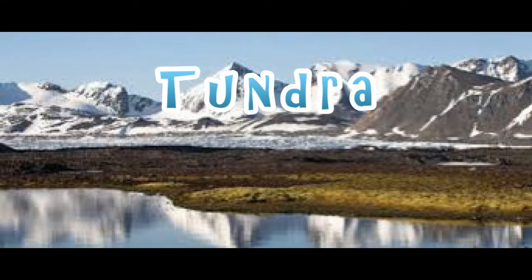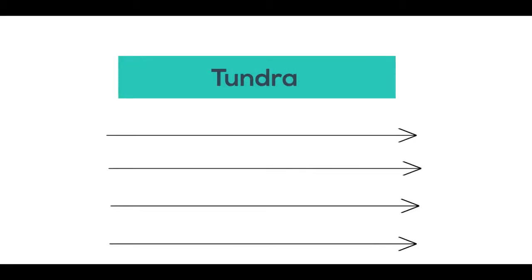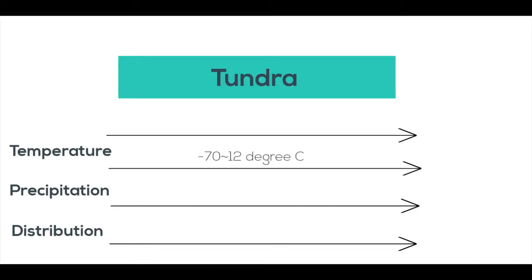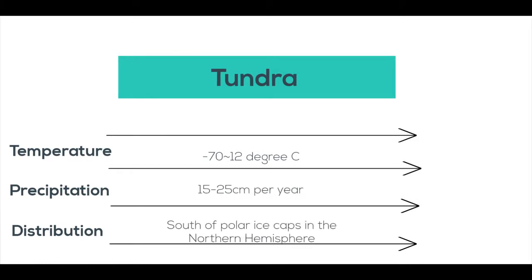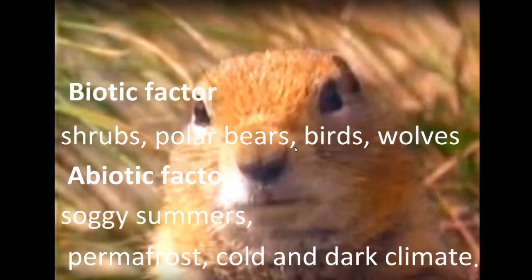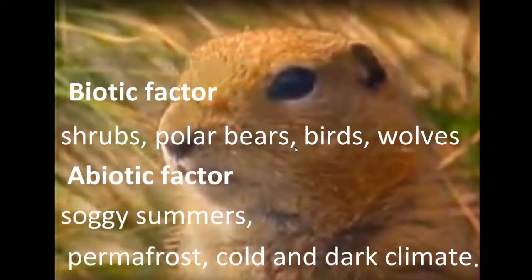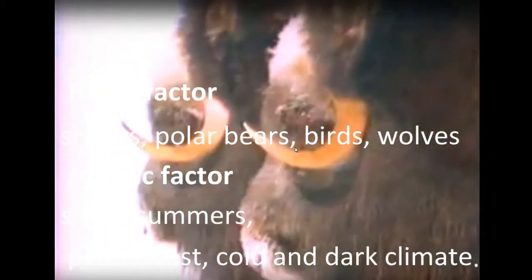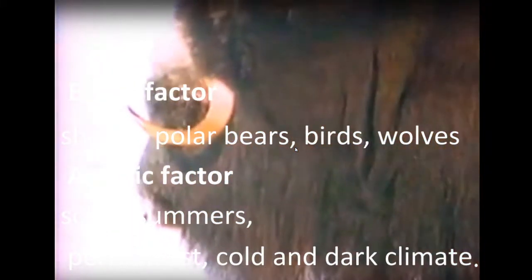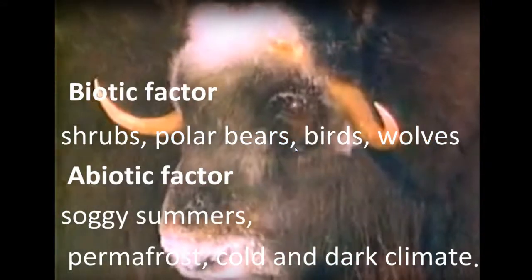Tundra. The tundra is a treeless biome, with a layer of permanently frozen soil below the surface called permafrost. Its temperature ranges from minus 70 to 12 degrees Celsius. Its biotic factor includes shrubs, polar bears, birds, and wolves. Its abiotic factor includes soggy summers, permafrost, and cold and dark climate.